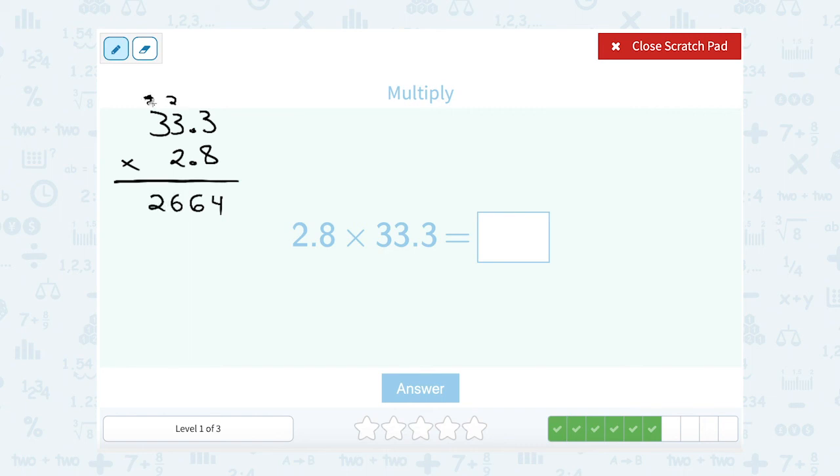I'm going to cross these out so I don't accidentally use them on the next part. So now I'm really thinking of this as a 20, so I have to put the 0 here. And then I can just multiply by 2. 2 times 3 is 6, 2 times this 3 gives me 6, and 2 times 3 gives me another 6.